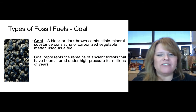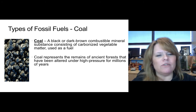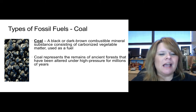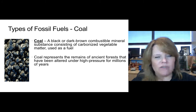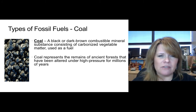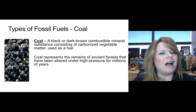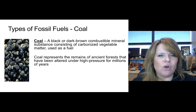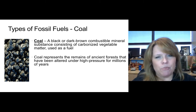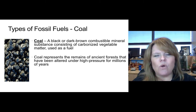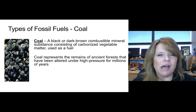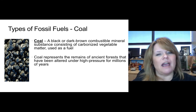What is coal? It's a black or dark brown combustible mineral substance consisting of carbonized plants — plant matter that has become a fuel resource. Coal represents the remains of ancient fossilized plants, usually from swamps, that have been altered under high pressure over millions of years. The lower the grade of coal, the lower the pressure that has been applied to it — that's why it's a lower grade. As coal ages and more rock layers get put on top, it becomes higher pressured, and that's important to the quality of the coal.